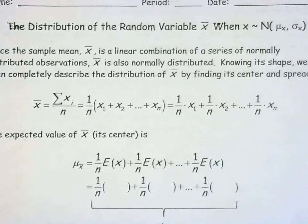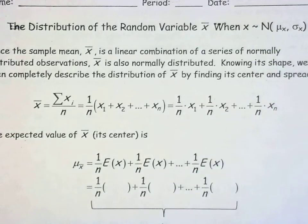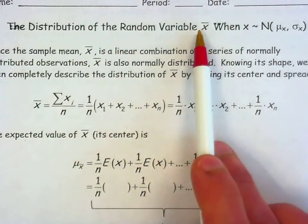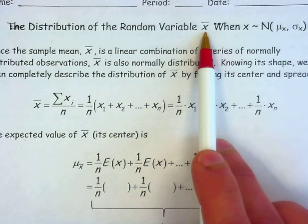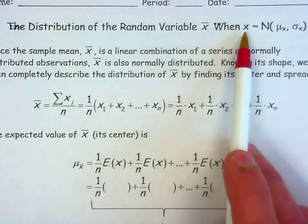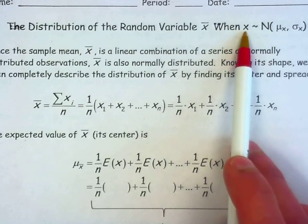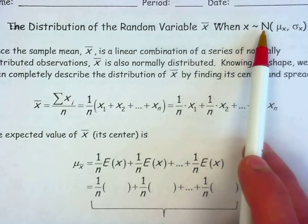Hi there. Let me take you through the handout here where I want you to learn what the sampling distribution looks like for sample means. We're looking at if we graphed lots and lots of sample means, how would their shape, center, and spread appear to us. We're assuming that we are sampling from a population x which is distributed normally.